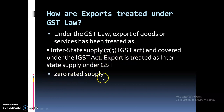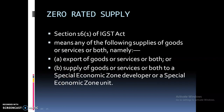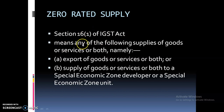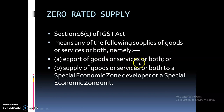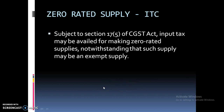Export of goods means zero rated supply. What is zero rated supply? As per Section 16B of IGST Act, zero rated supply means the following supply of goods or services or both — namely, export of goods, services or both, or supply of goods, services or both to a Special Economic Zone developer or to a Special Economic Zone unit.